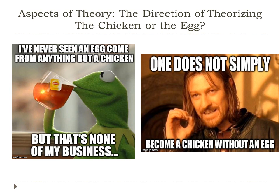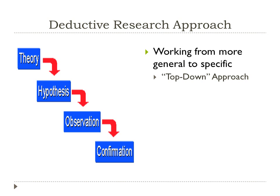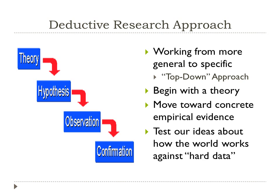Something important to understand is the direction of theorizing — what comes first, a theory or the research to back it up? One type of reasoning is called the deductive reasoning approach, working from the general to the specific — the top-down approach. This is where you start with a theory and move towards empirical evidence to support it. You test your ideas about how the world works against the hard data you collect, moving from theory to hypothesis to observations to ultimately confirm your theory.